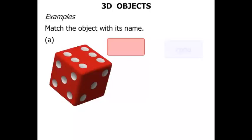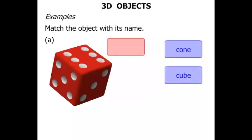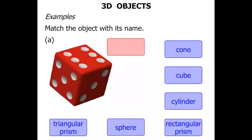So the names we're going to choose from: a cone, a cube, cylinder, rectangular prism, sphere, or triangular prism.